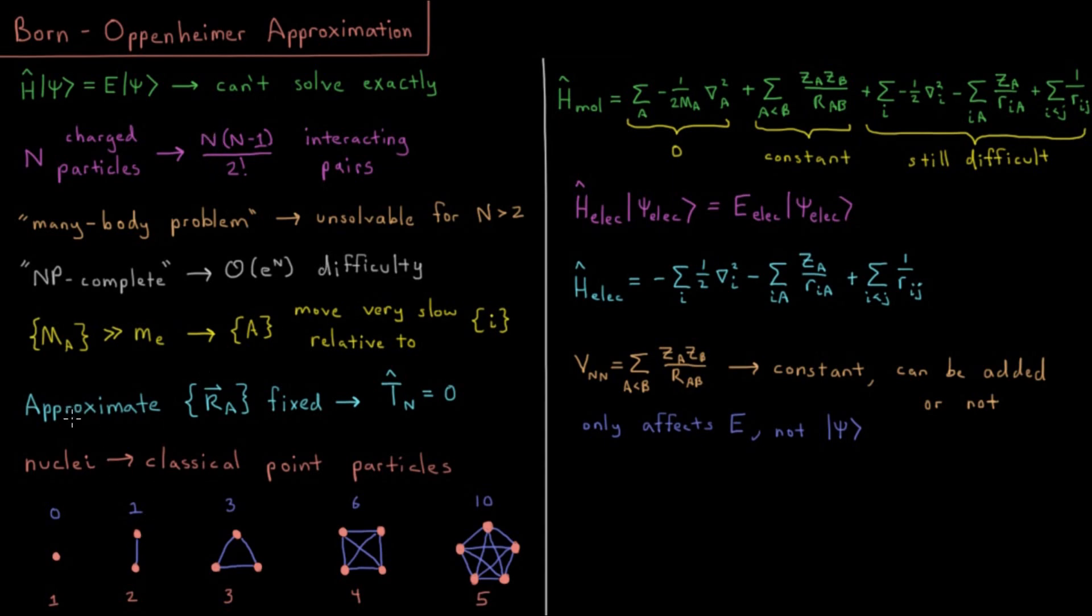So how does this approximation, called the Born-Oppenheimer approximation, first used by those two scientists, what does that do when we apply it to our molecular Hamiltonian? The first thing to note is that our nuclear kinetic energy goes to zero, because as I mentioned they're all fixed, so the Laplacian of them is going to be zero at all points because they're not moving, so that goes to zero.